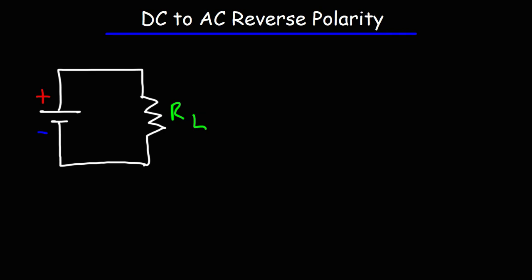Consider the circuit shown on the board. We have a battery attached to a resistor. We know that conventional current will flow from the positive terminal through the resistor to the negative terminal. Keep in mind electron flow is in the opposite direction. In this video we're going to talk about two elements that can briefly reverse the polarity of a DC signal — these are capacitors and inductors.